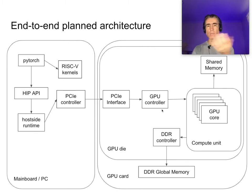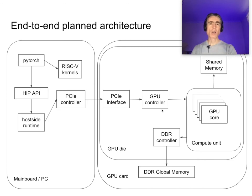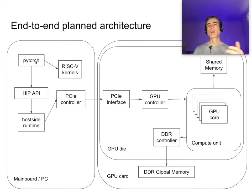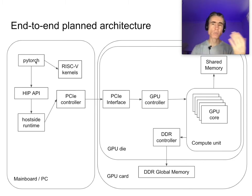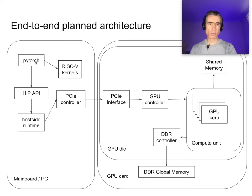The GPU controller handles virtual memory, starting and stopping kernels, and so on. We've also got a compute unit containing multiple GPU cores, a DDR controller, DDR global memory on the card, and some shared memory. There are also some RISC-V kernels. When you compile PyTorch it compiles GPU kernels at compilation time — these could be CUDA kernels or AMD HIP kernels. We are using RISC-V, so we need the GPU kernels to be compiled into RISC-V.